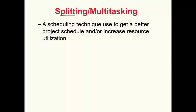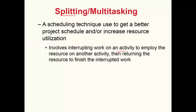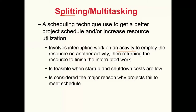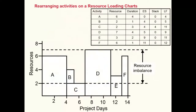Another key technique in resource management is activity splitting or multitasking — a scheduling technique used to improve the project schedule and increase resource utilization. It involves interrupting work on an activity to employ the resource on another activity, then returning to finish the interrupted work. It is feasible when startup and shutdown costs are low, but is considered a major reason why projects fail to meet schedule. In the resource histogram example, there is a trough halfway through the project which can be addressed through such techniques.